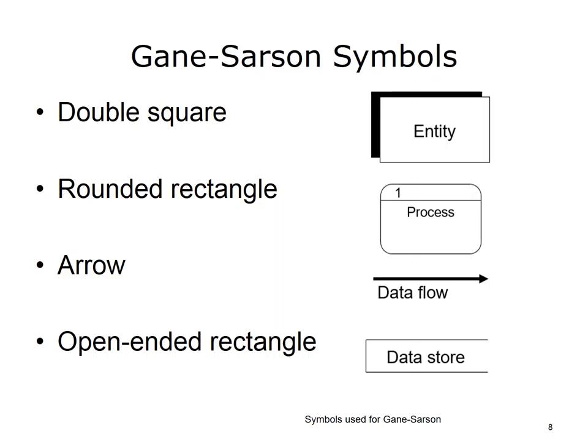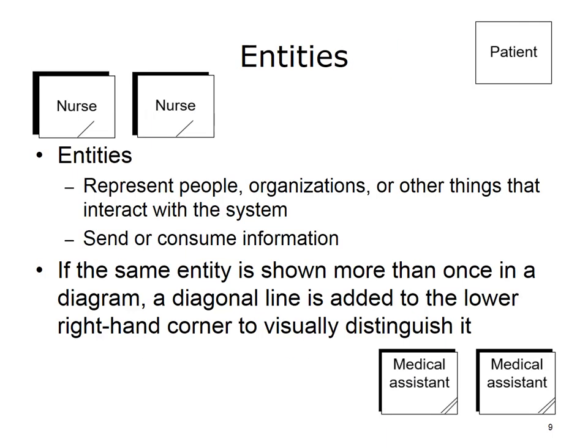Entities represent people, organizations, or other things that interact with the system — entities are outside of the system. They are part of a process but external to the information system. Entities send or consume information and in Gane-Sarson notation are also called sources or sinks of information. If the same entity is shown more than once in a diagram, a diagonal line is added to the lower right-hand corner to visually distinguish it. For example, if a nurse entity was drawn twice, a single diagonal line would be added; if a medical assistant entity was similarly drawn twice, two diagonal lines would be added.